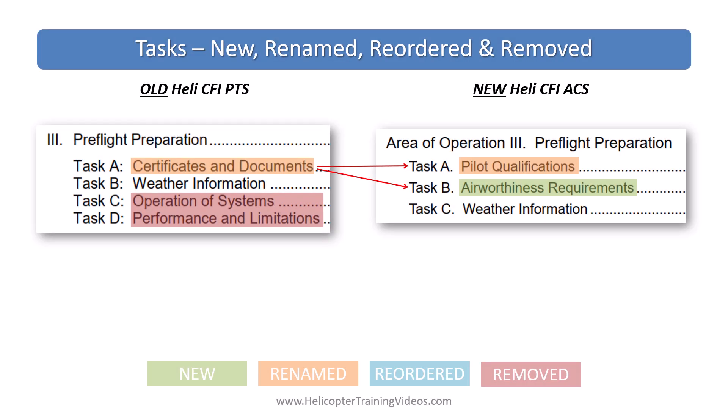The last section of this video covers the other areas of operations that have had changes to their tasks — just titles, orders, new tasks, or removed tasks, not going into each task in detail. In area of operation three, pre-flight preparation: certificates and documents will split into pilot qualifications and airworthiness requirements — the same as private and commercial. The weather information task is still there but has been updated for new weather products and the use of EFBs and in-flight weather avionics.